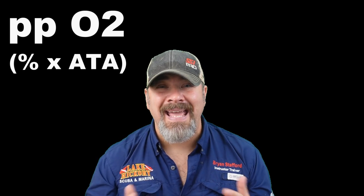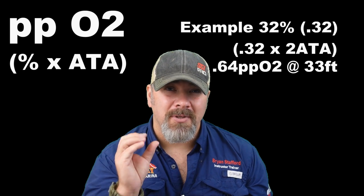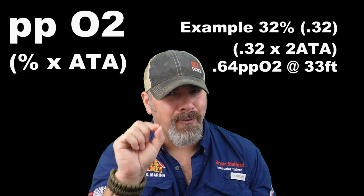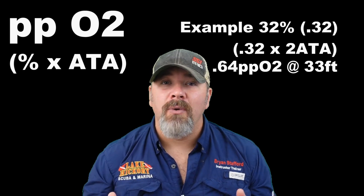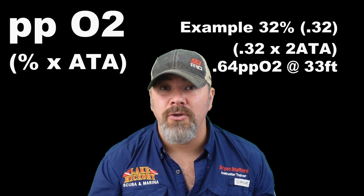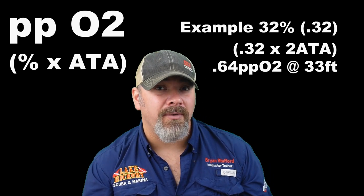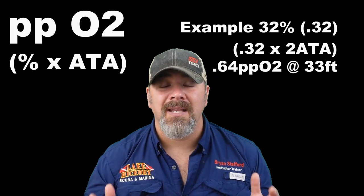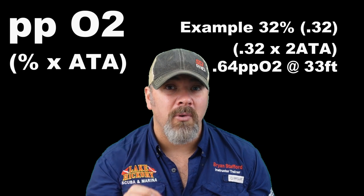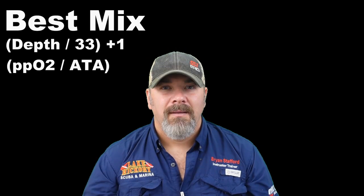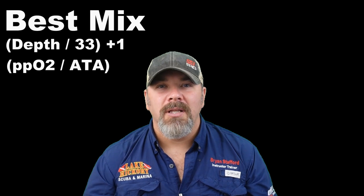The next formula is how to calculate the partial pressure of O2 of any blend at any depth. We take the percentage of the blend — say 32% — which converts to 0.32, and multiply it by the atmospheric pressure. So taking 32% nitrox to 33 feet (two atmospheres): 0.32 times 2 gives a partial pressure of oxygen of 0.64 at 33 feet.